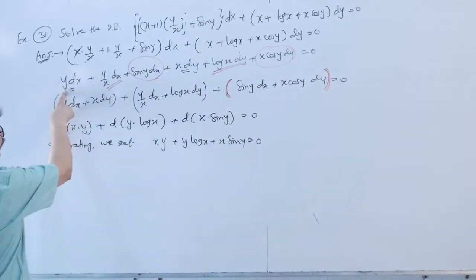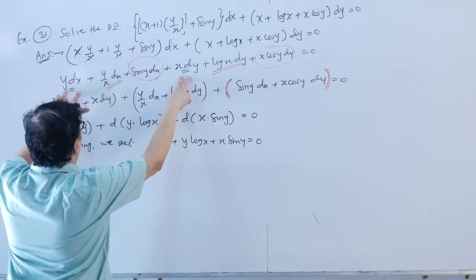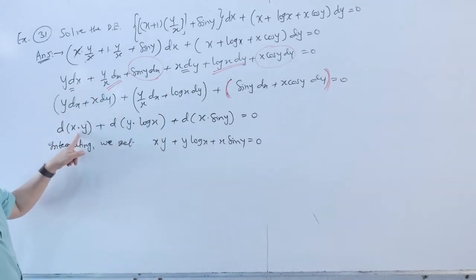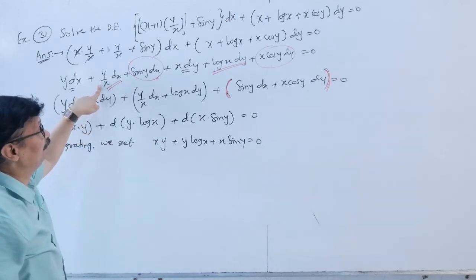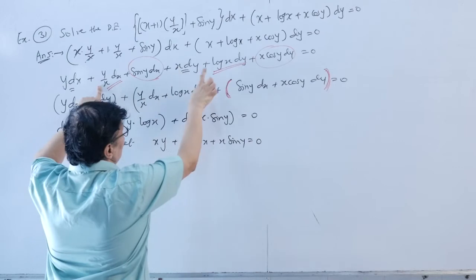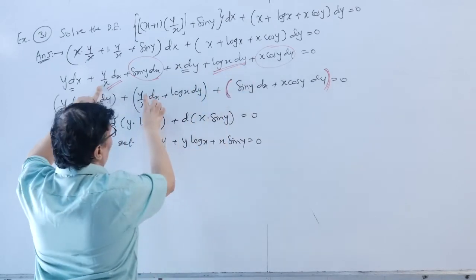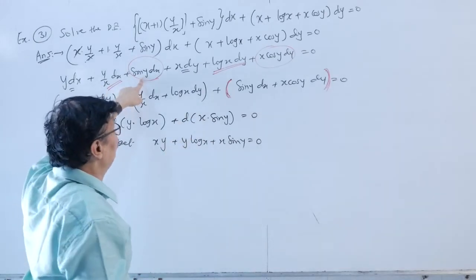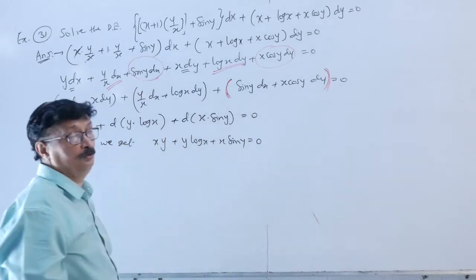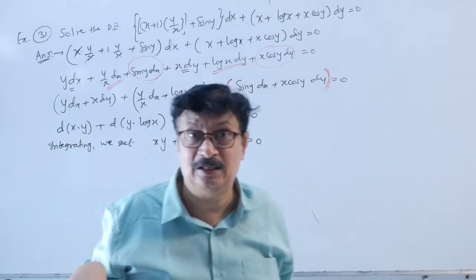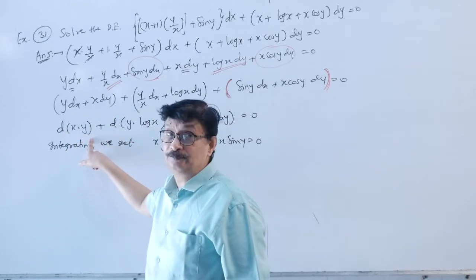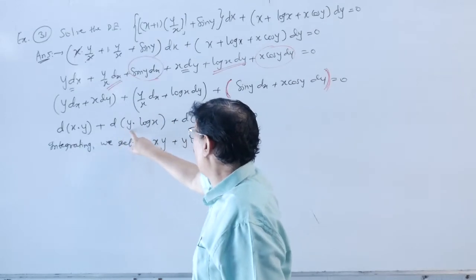Grouping: bring y·dx and x·dy together — x·dy + y·dx = d(xy). Then bring (y/x)·dx and log(x)·dy together — y/x·dx + log(x)·dy = d(y·log(x)), since derivative of log(x) is 1/x.